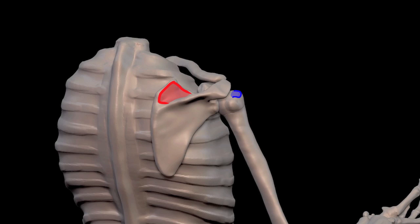When the supraspinatus is activated, it shortens the distance between these two attachments, so you can see that it helps raise the arm.